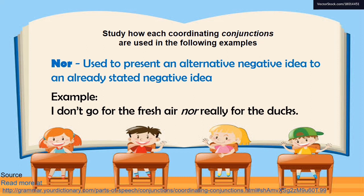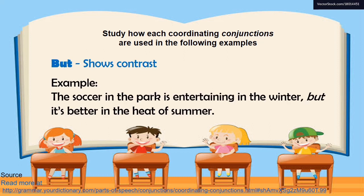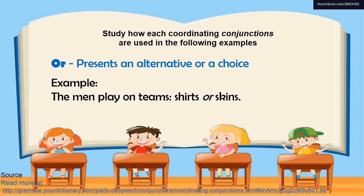'Nor' is used to present an alternative negative idea to an already stated negative idea. For example: I don't go for the fresh air, nor really for the ducks. 'But' shows contrast. An example sentence would be: The soccer in the park is entertaining in the winter, but it's better in the heat of summer. 'Or,' on the other hand, presents an alternative or a choice. Example sentence: The men play on teams — shirts or skins.